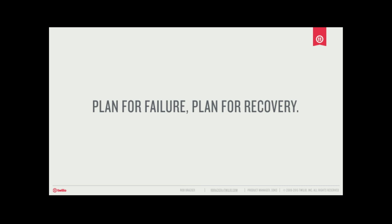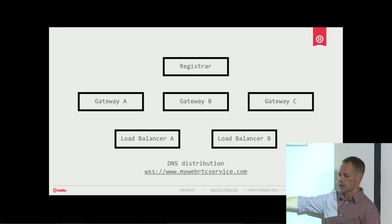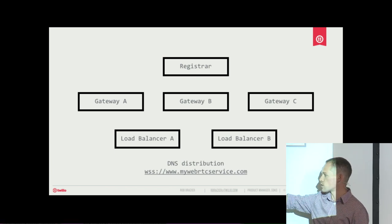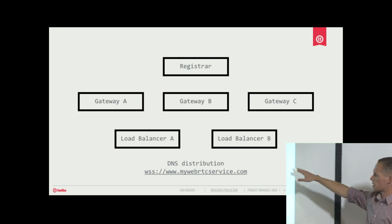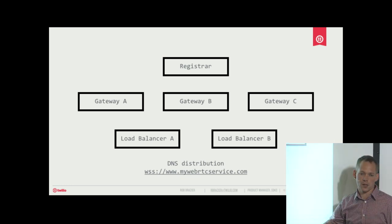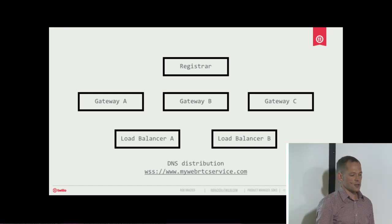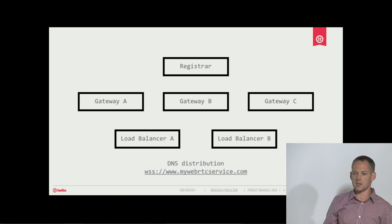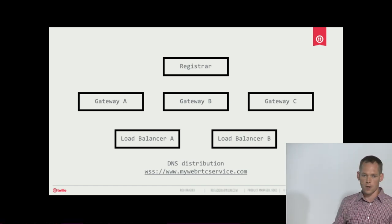You not only have to plan for things to fail, you have to plan for what happens when you recover from a failure. Our simplified view of a portion of Twilio's architecture: we have a DNS name pointing to gateways that does DNS distribution to a number of load balancers in a given AWS region. Behind that we have a set of gateways for signaling, and further back we have a registrar — a database that keeps track of where users are connected right now, so if someone tries to call them you can ring their phone.